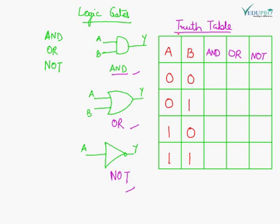We should study the truth table of all three gates. For the AND gate: when both inputs are zero, the output is zero. When A is zero and B is one, the output is zero. When A is one and B is zero, the output is again zero.